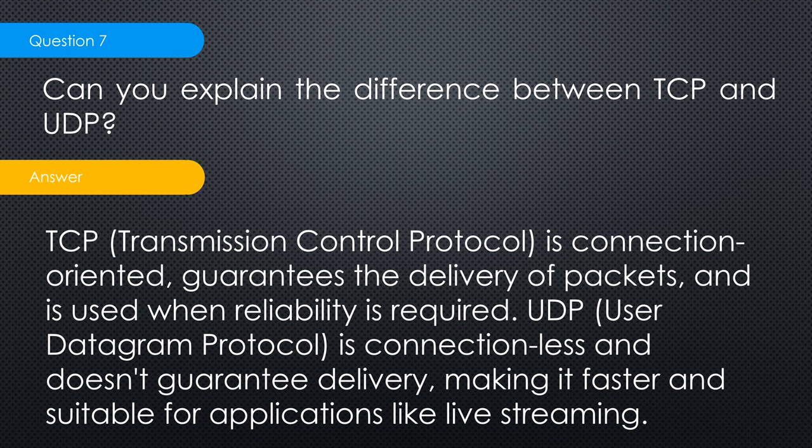With TCP, when you send a large file, sequence numbers are used and a termination sequence tells the other computer how many packets were sent. The receiver verifies the count before disconnecting. UDP, or User Datagram Protocol, is different — for example, during a phone call you might not hear someone clearly, but the stream just keeps going. UDP is not connection-oriented; if a packet is lost, it's lost, and packets may arrive out of sequence.